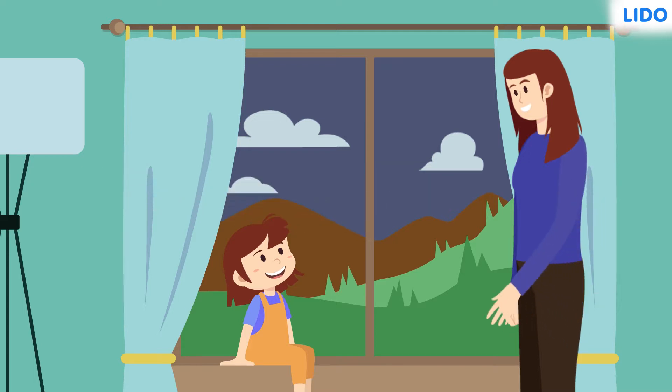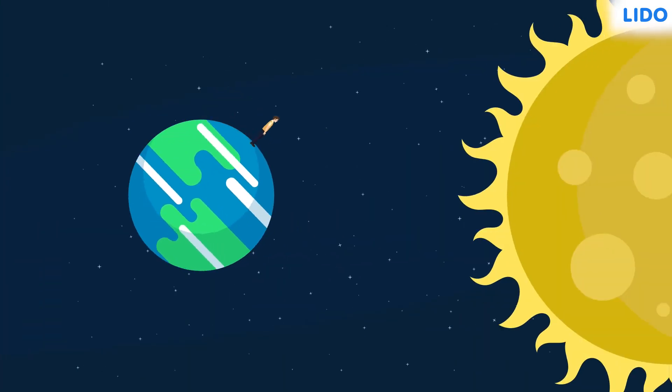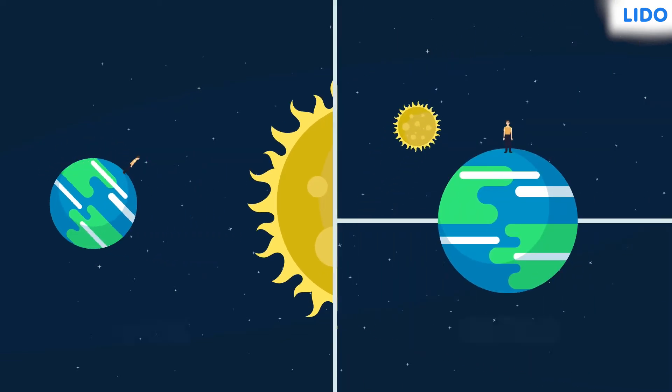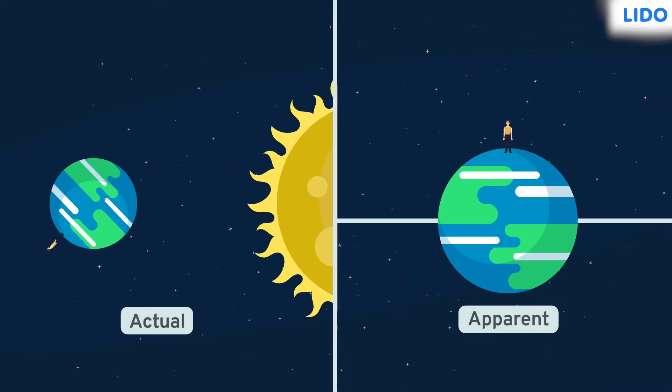To this, her mother told her that the sun doesn't move at all. It is the earth which is moving around the sun. Since we are moving along with the earth, we cannot differentiate its motion and we feel that the sky moves.